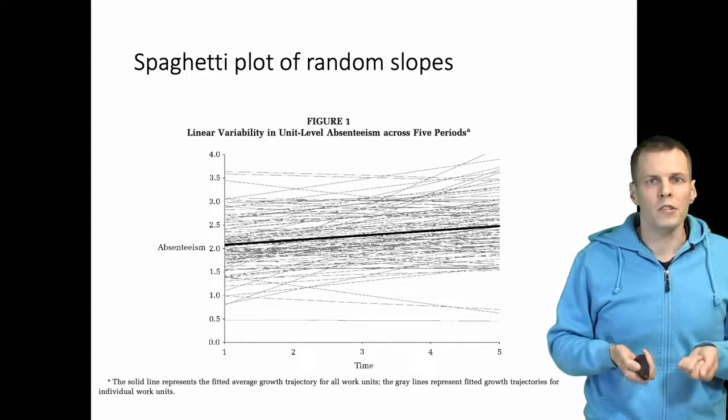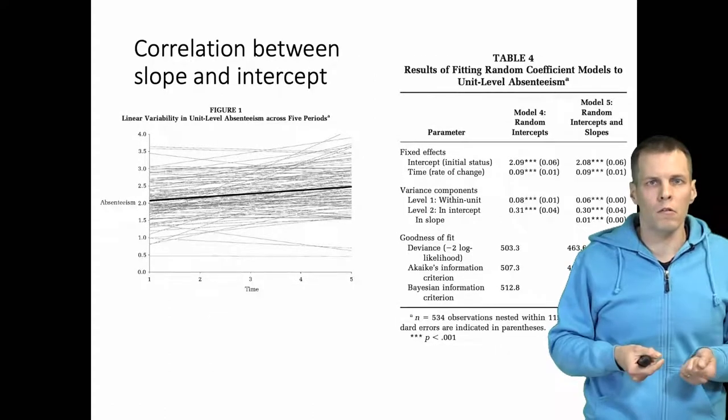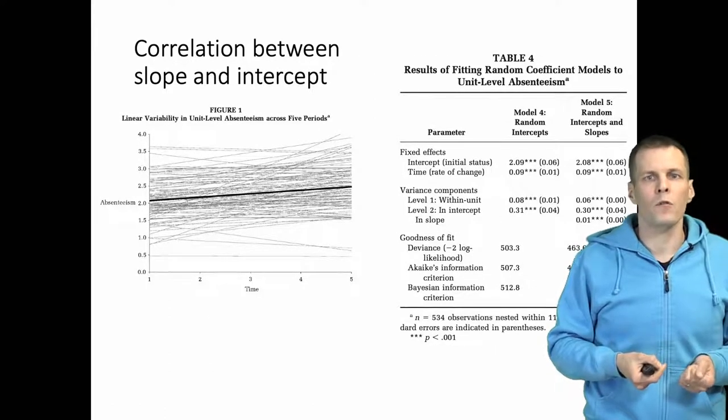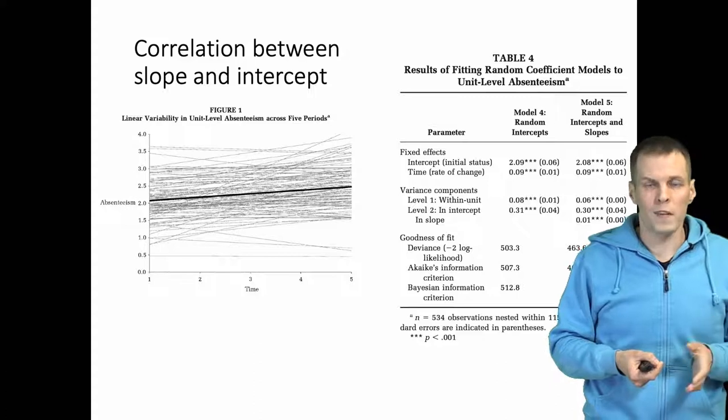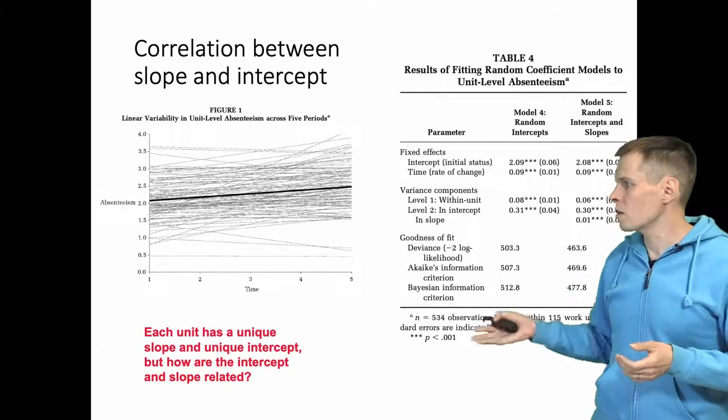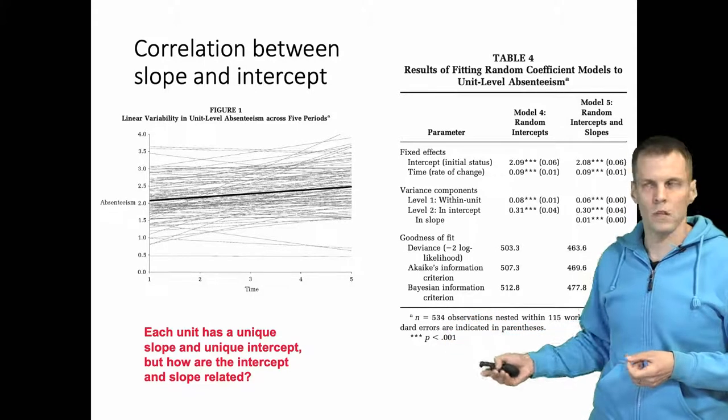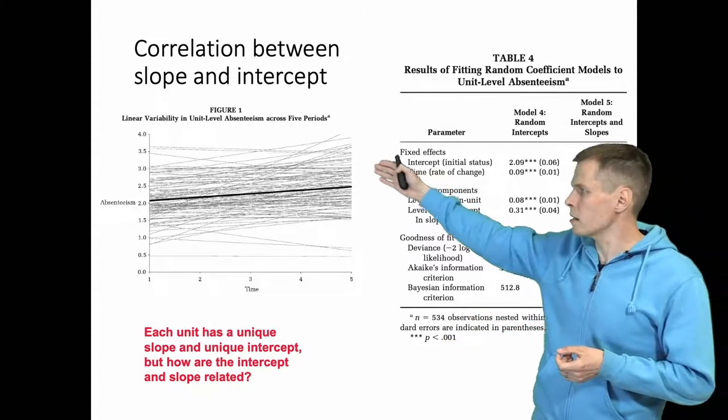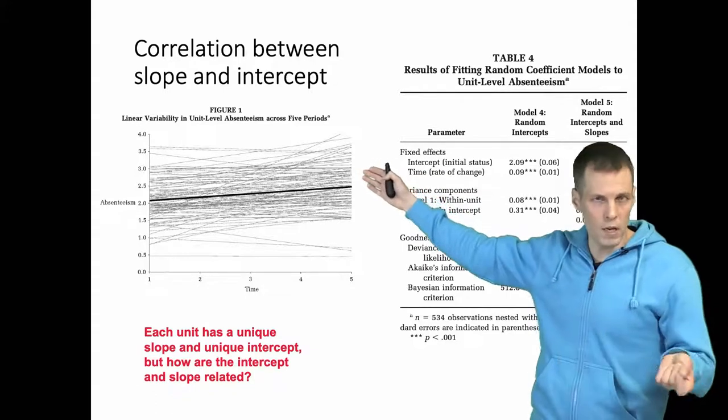Now an important question is: if you have a regression coefficient, and if you have one coefficient the slope and one coefficient the intercept, how are the slope and intercept related? Each of these lines has a unique slope and unique intercept.